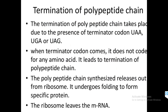The termination of the polypeptide chain takes place due to the presence of a terminator codon. There are three termination codons: UAA, UAG, and UGA. These three are responsible for termination of translation. When a terminator codon is encountered, it does not code for any amino acid. The polypeptide chain synthesized is released from the ribosome and undergoes folding to form a specific functional protein.